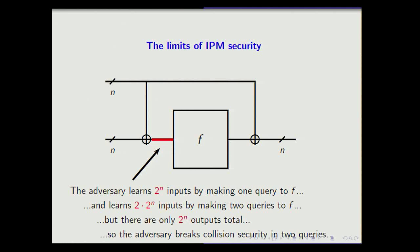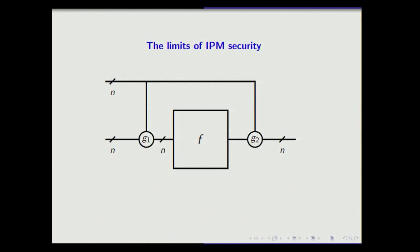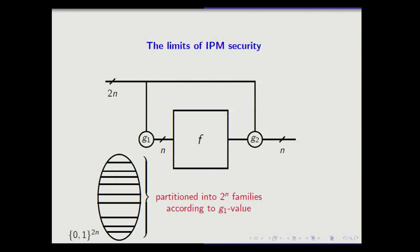This compression function can be broken in just two queries. Let's think about repairing it by doing something more complicated — replacing the XORs with arbitrary functions g1 and g2, which might do some field multiplication or something weirder, and hope for the best. Moving the bottom wire to the top, the 2n bits of input are now at the top. For each input value, there is some particular g1 output, so the set of all inputs is partitioned into 2^n different families according to their g1 output.